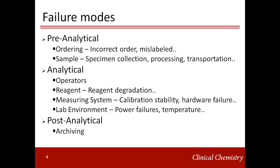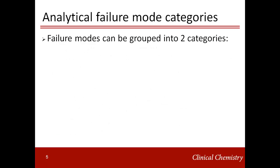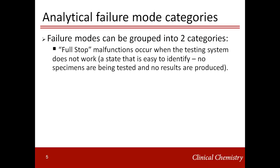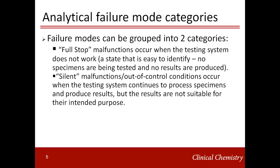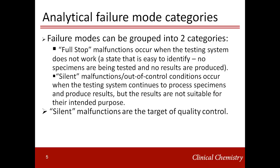Now let's talk more about these analytical failure modes. Failure modes can be grouped into two categories: full-stop malfunctions or silent malfunctions. Full-stop malfunctions occur when the testing system does not work — these are easy to identify because testing is stopped and no results are produced. However, we are not so lucky with silent malfunctions. These silent malfunctions lead to out-of-control conditions where the testing system continues to process specimens and produce results, but these results are not suitable for their intended purpose. These out-of-control conditions are hard to identify and are the target of quality control.